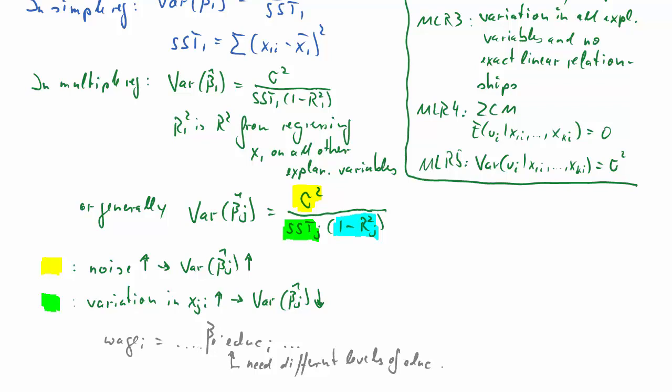Now, to find out from data what that effect is, we actually need different levels of education. Think of the extreme case. If you only had one level of education in your data set, then the data are just not rich enough to give you the information of how wage changes if education changes. So that's why in MLR3 we have the condition that we need variation in all explanatory variables. And in fact, the more variation, the better in general.